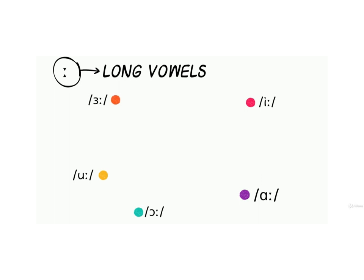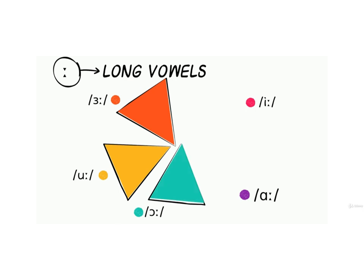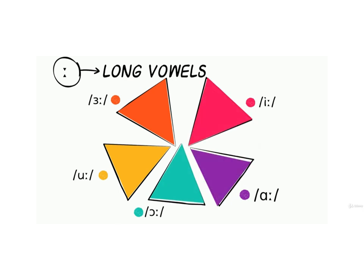Long vowels have two dots in front of them. إذا رأيتوا نقطتين أمام الرمز، اعلموا أنها فاول طويلة. في هذا الفيديو سنسمع مثال واحد لكل صوت.